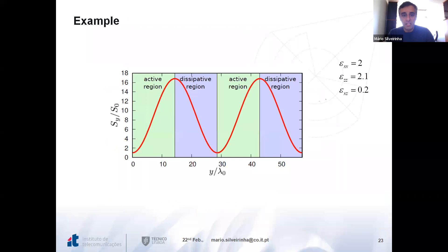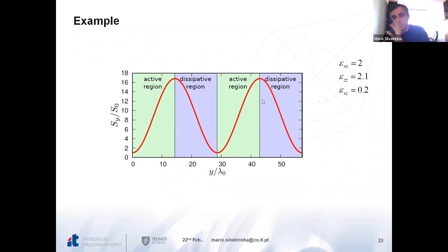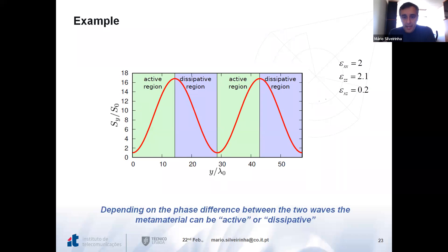This gives rise to what we call power beating: the Poynting vector varies sinusoidally in space, because the propagation constants are real-valued. The wave starts with some amplitude and propagates as a superposition of two waves. If it were just one wave, the Poynting vector would be constant. For a superposition, you get this power beating: in some regions the wave transports more power — it is amplified — then it starts being dissipated, and they alternate. The same material can behave as an amplifier or as an attenuator.